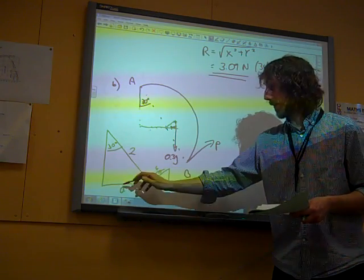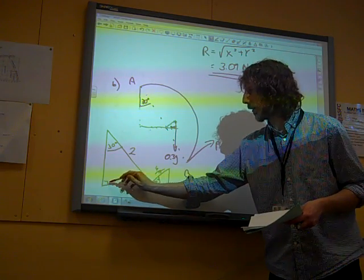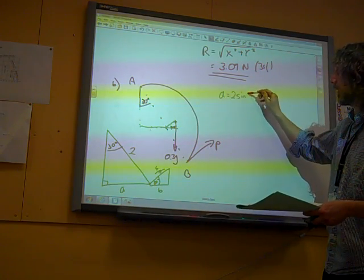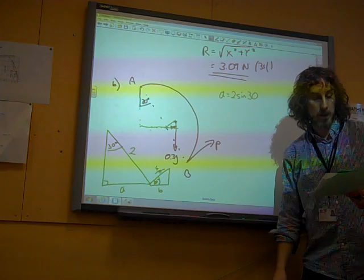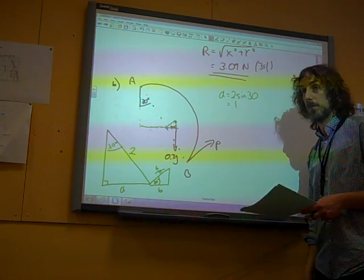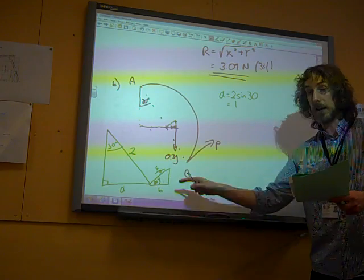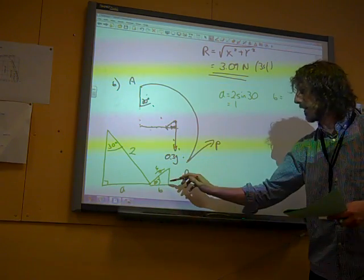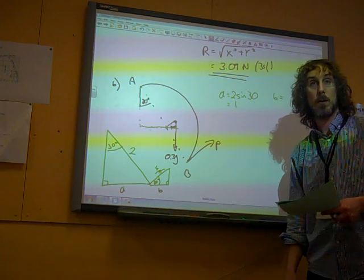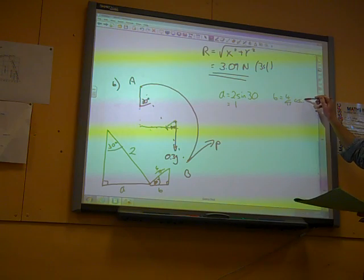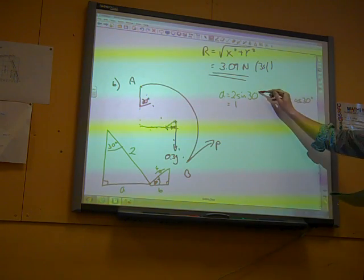So if I think about these two distances, because all together they add up to the horizontal distance of the line of action, the perpendicular distance of the line of action. So A, that's the opposite in that triangle. There's my right angle, there's the hypotenuse. So A is 2 sin 30. So the distance A is actually 1.